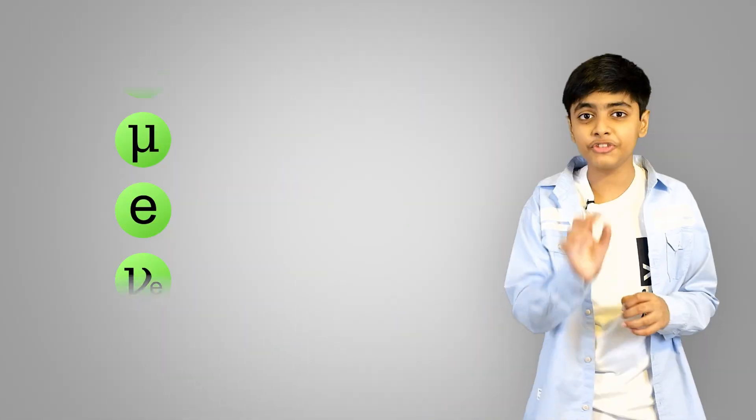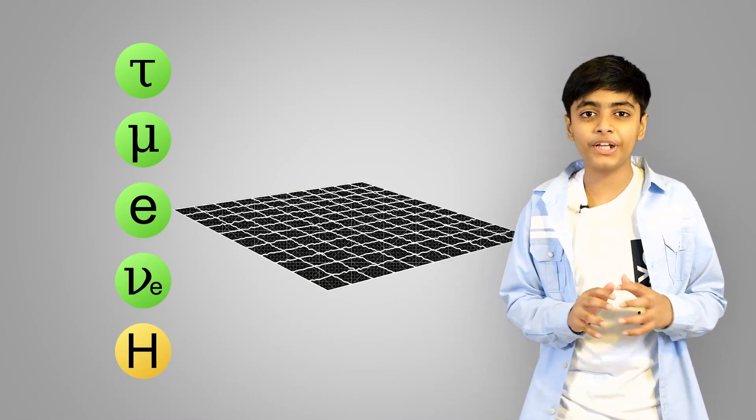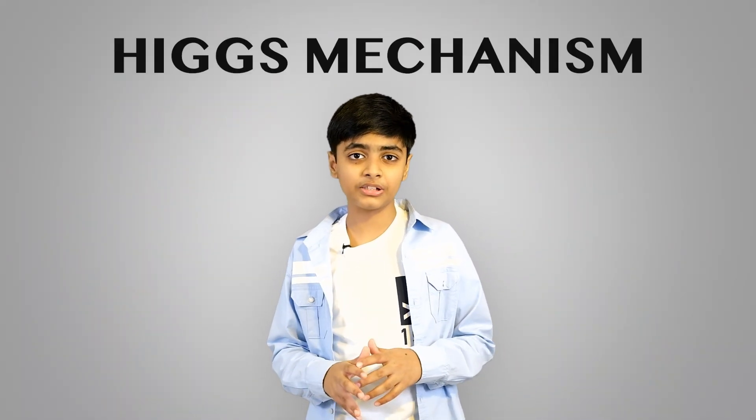Quantum field theory states that each fundamental particle is simply a vibration in its own particular field. This theory gives us a lot of information about these particles, but it also gives us a few mistakes, and to solve these mistakes we have the Higgs mechanism.